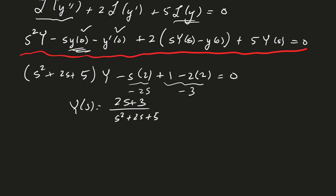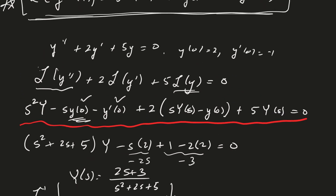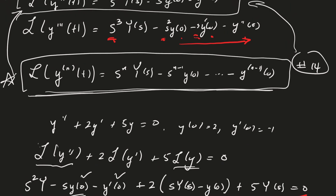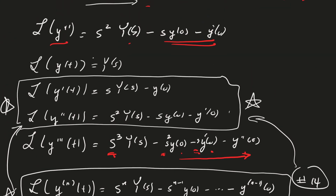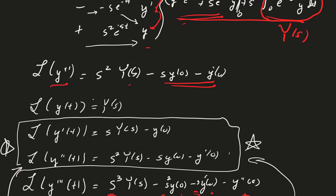To solve the differential equation, we just invert both sides of the transform. We actually did this inversion already — let me find it. We took 2s plus 3, completed the square in the denominator, broke up the fraction, and figured out the constants needed to invert the transform. The constants turn out to be 2 and one half.